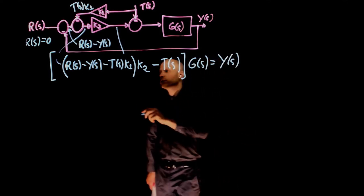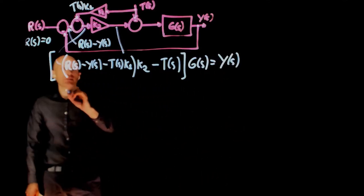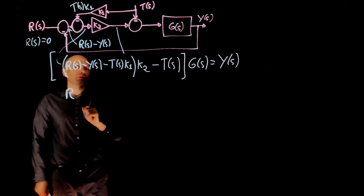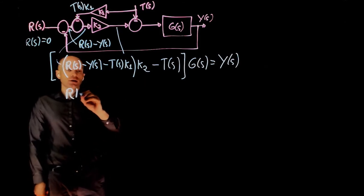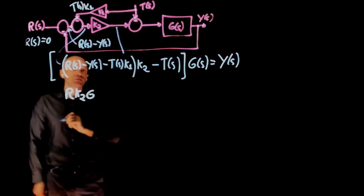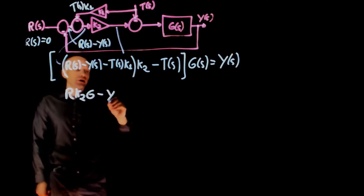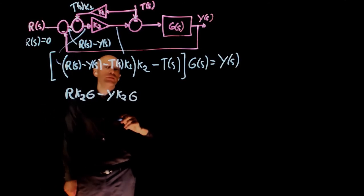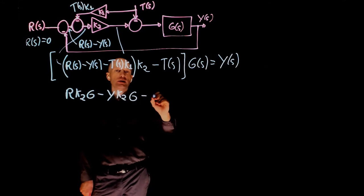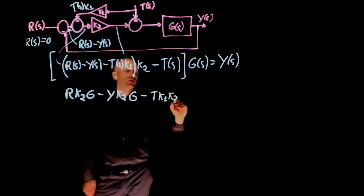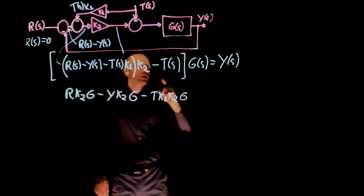Now let's multiply this out. What do we have? We have R times K2 times G. I'm going to omit the s's for now, everything is in the frequency domain.